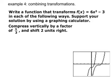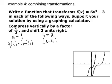First, we're going to compress vertically by a factor of a third. That means a equals one-third. And if you remember, our new function equals a times our old function. And shift two units right. It means h equals 2. So the inside is x minus h.